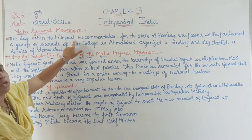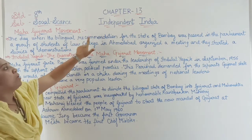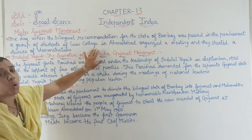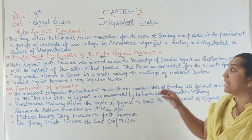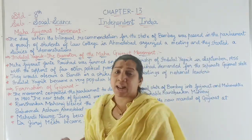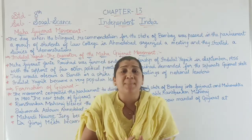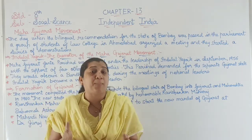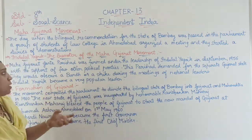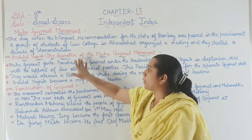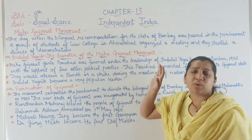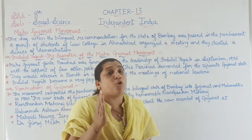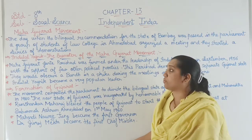When the recommendation for the bilingual state of Bombay was passed in parliament, a group of students from Law College in Ahmedabad organized a meeting and started a series of demonstrations. As other states were being divided on the basis of language, Gujarati people also wanted a separate state from Bombay — that is, from Maharashtra and Mumbai. Indulal Yagnik was the prominent leader of this movement, along with Brahmatumar and many other leaders who joined the cause for the separation of Gujarat from Bombay.